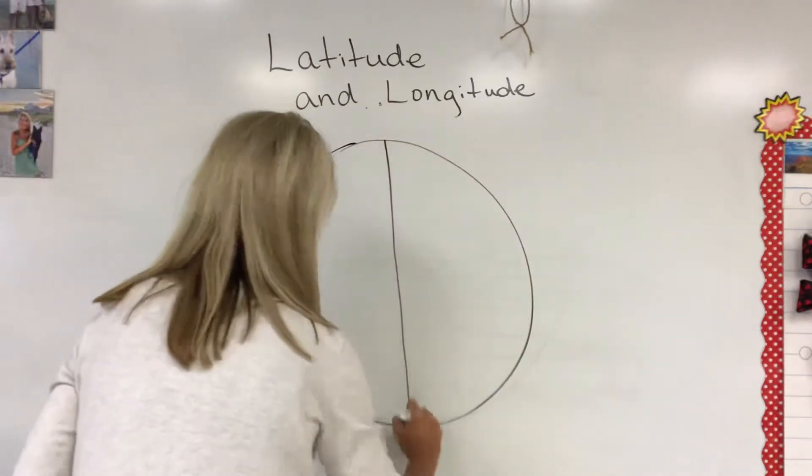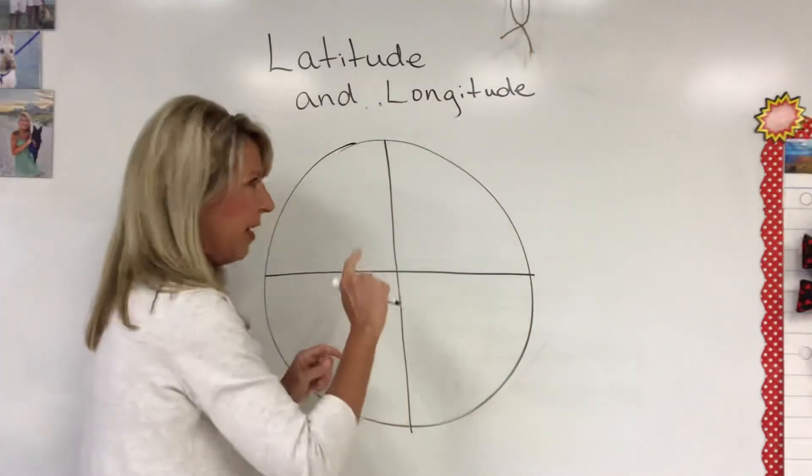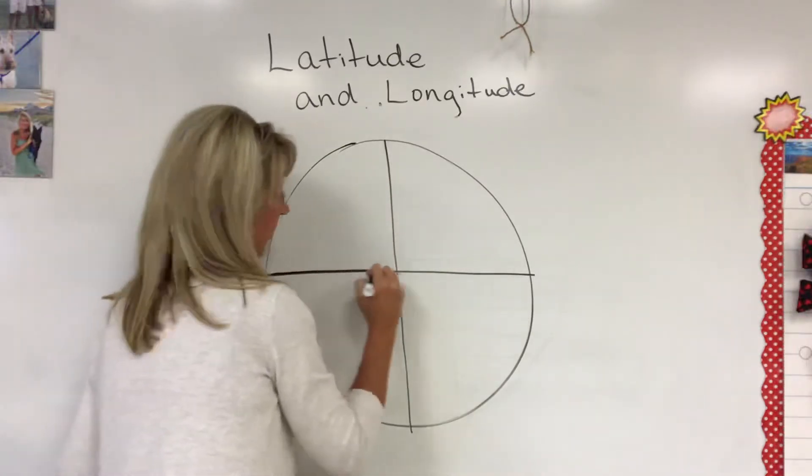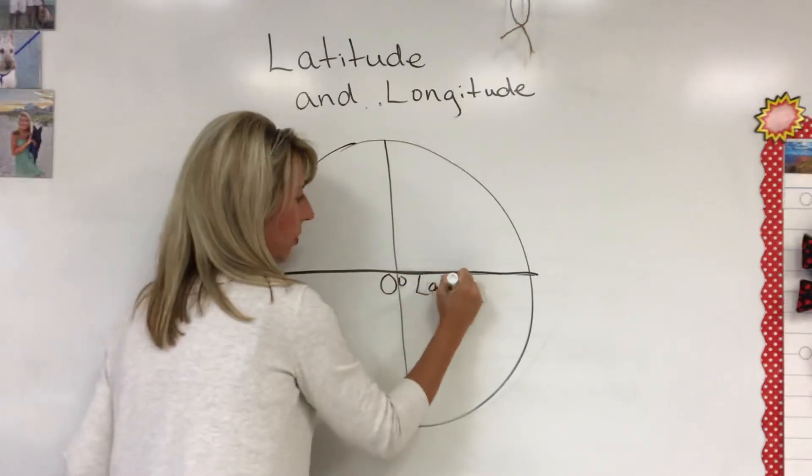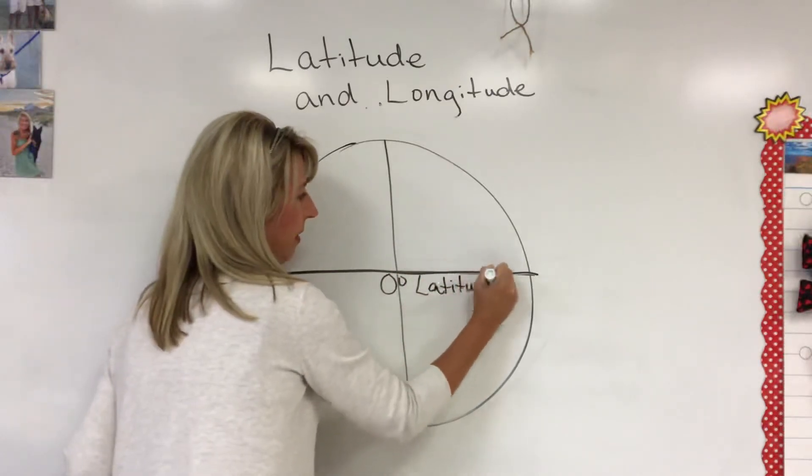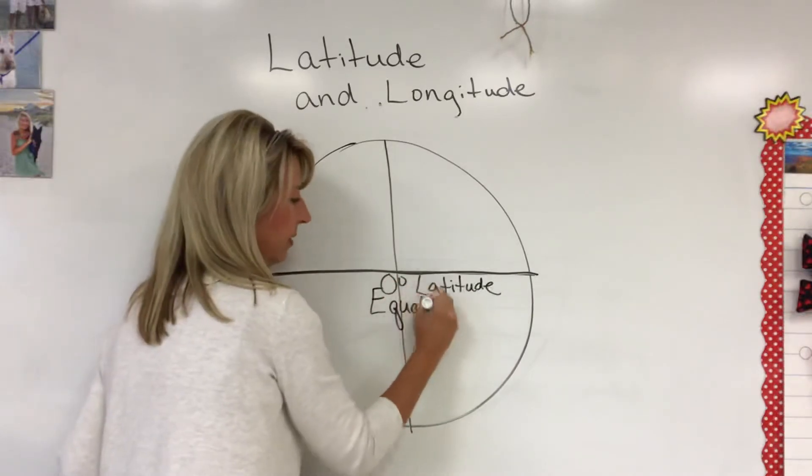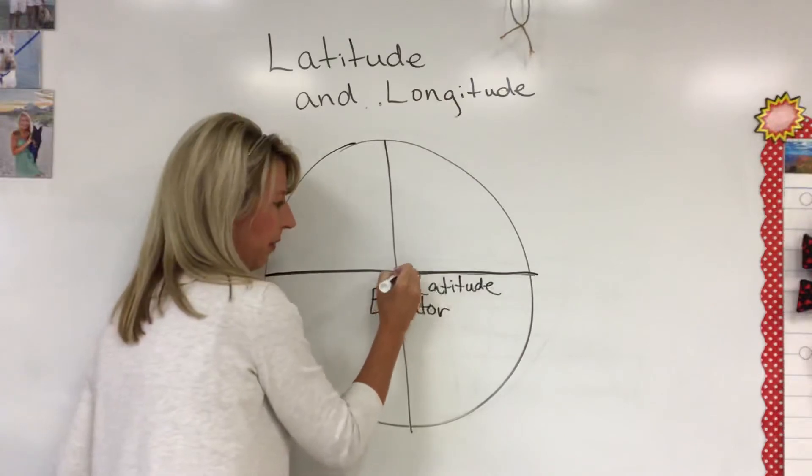I'm going to split it into parts because you're gonna learn about the other one. Here is your equator and it is zero degrees latitude, and it has a special name of equator because it is zero. You have to do a little degrees mark on it.